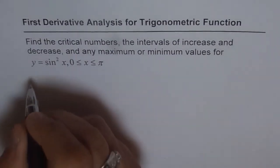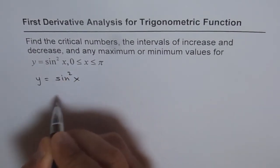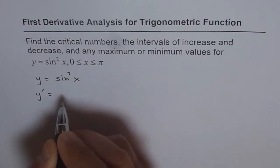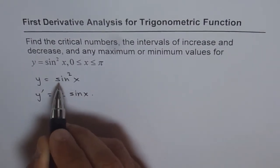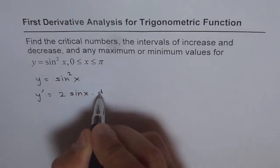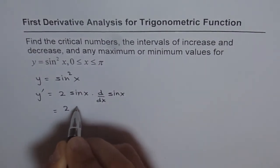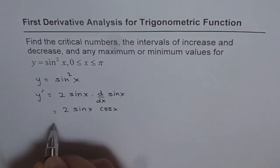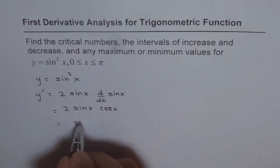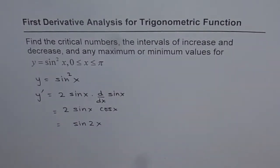Let's start with the function itself, which is y equals sin squared x. The first derivative is 2 times sin x times d/dx of sin x, which gives 2 times sin x cos x. Now, if you remember, 2 sin x cos x can be written as sin 2x. So the first derivative is sin 2x.